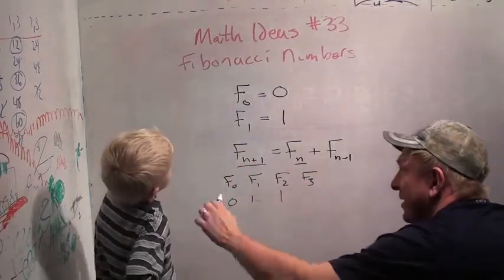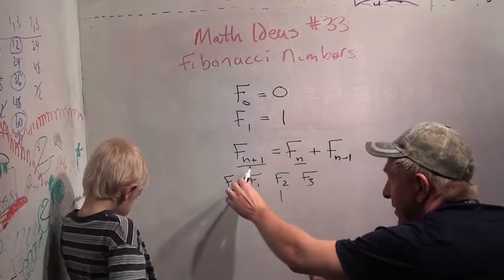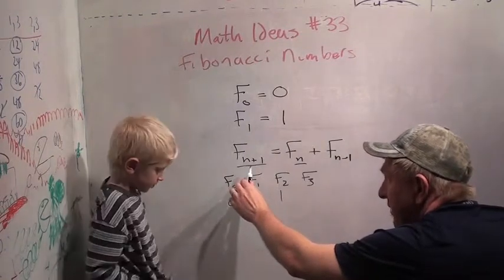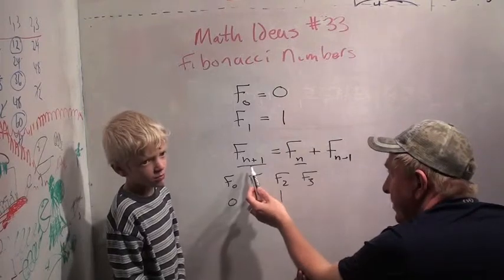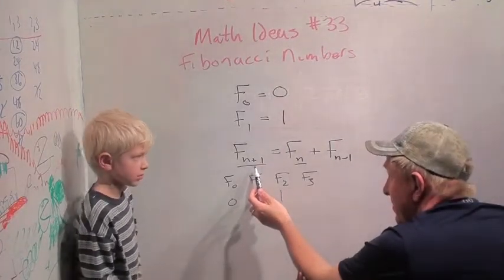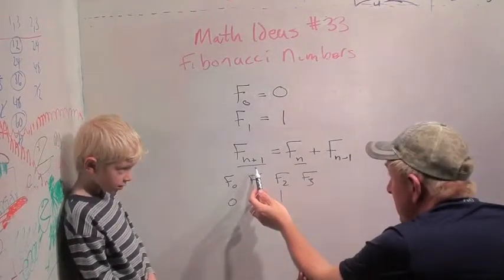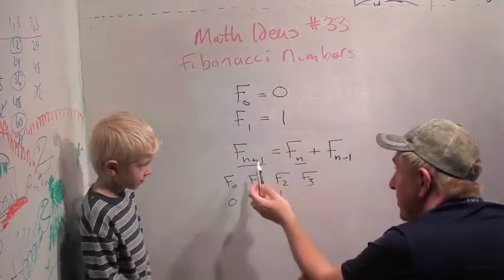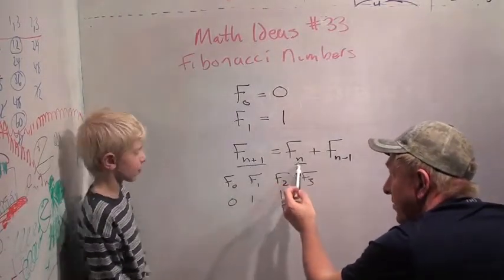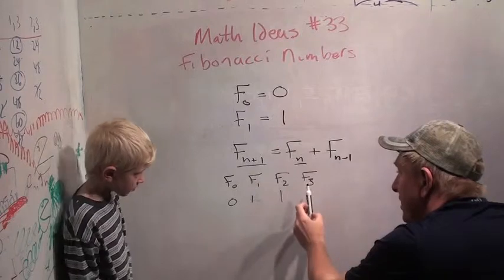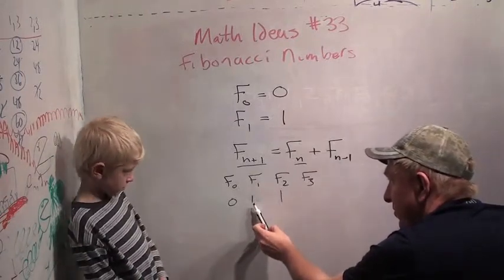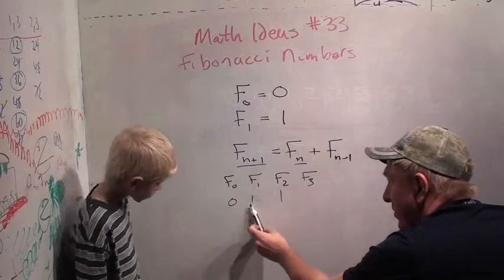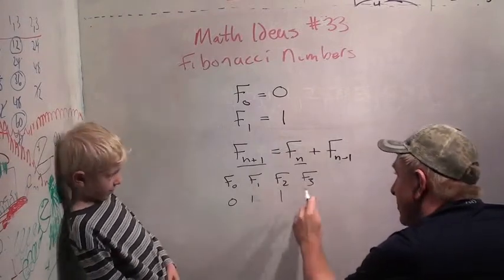And it says F three. If n plus one is three, if n plus one is three, what is n? If n plus one equals three, n equals? Two. Two, right. So, this says F three is F two plus F one. F three is F two, which is one, plus F one, which is one. So, F three is one plus one, which is? Two. Very good.